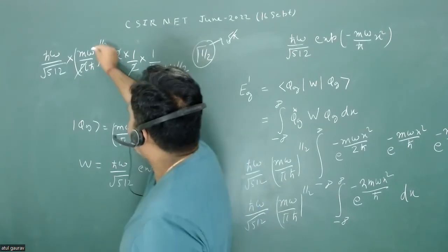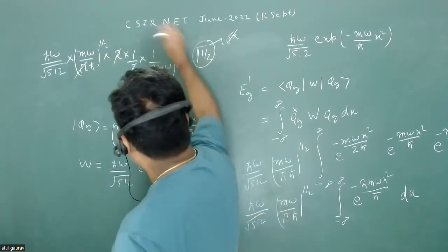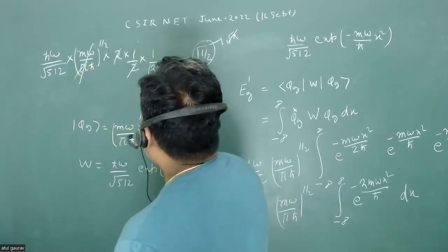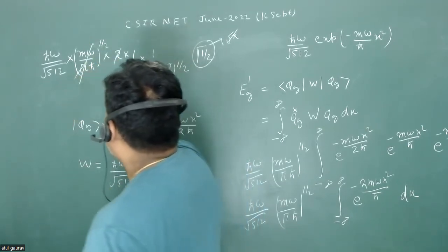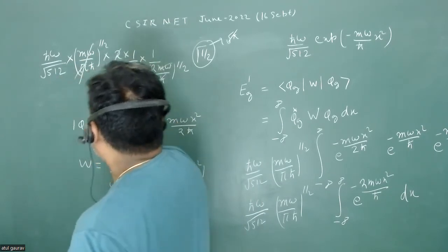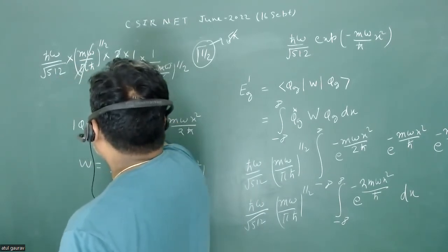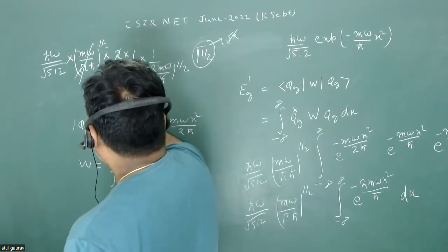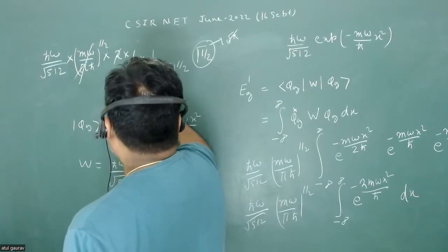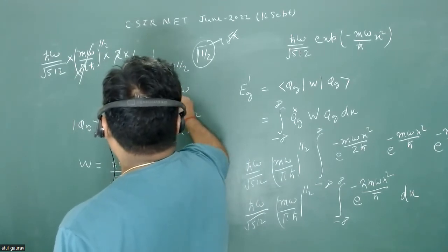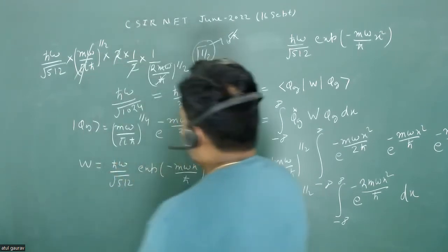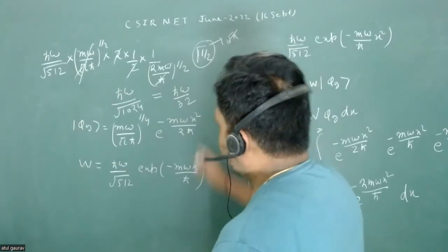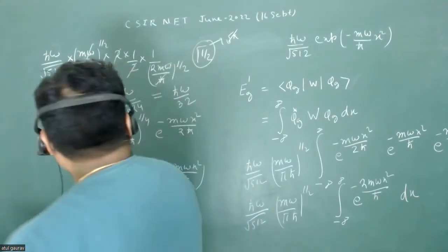After cancellation — m omega / h-bar terms cancel and the factor of root 2 multiplies with 512 to give 1024 — we obtain the first-order energy correction e_g^(1) = h-bar omega over 32.